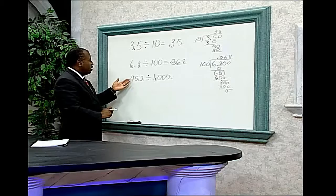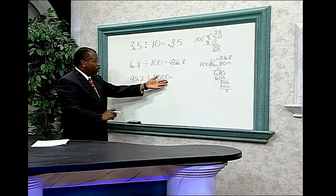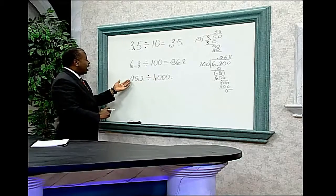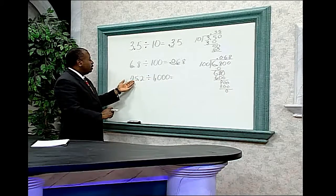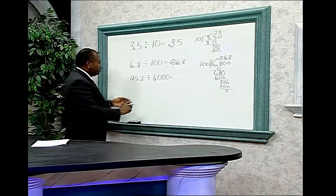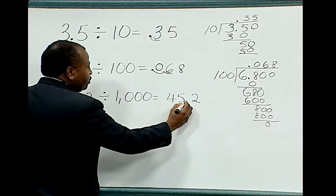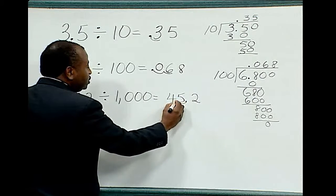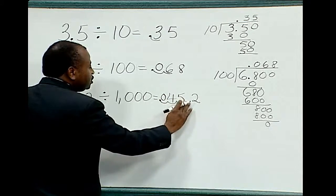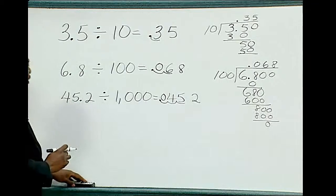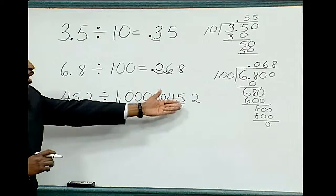Example number three: forty-five point two divided by one thousand. The one thousand contains three zeros. Therefore, when dividing forty-five point two by one thousand, move the decimal point three places to the left: one, two, three. Add a zero to fill the space, and erase the original decimal point. Therefore, forty-five point two divided by one thousand equals point zero four five two.